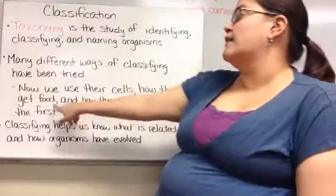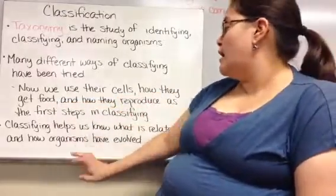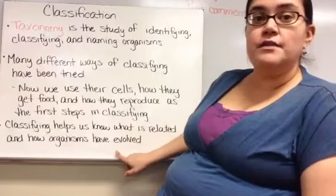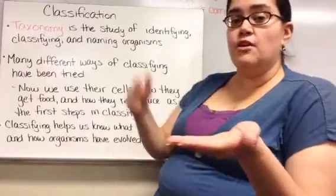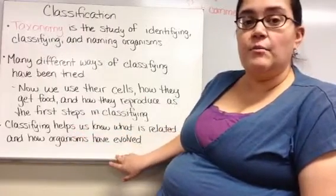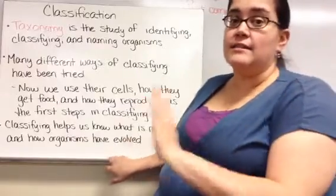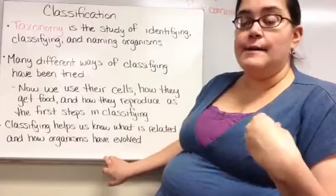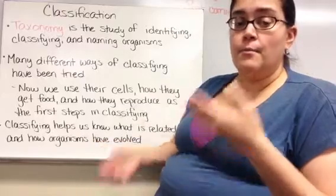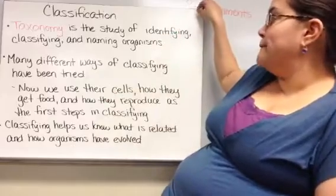Today we'll talk about classifying using cells, how organisms get their food, and how they reproduce. Classifying helps us know what is related to each other and how organisms have evolved. Even though a shark and dolphin ended up in the same place and look similar, they evolved from very different ancestors — a shark lays eggs and is cold-blooded, while a dolphin gives live birth and is warm-blooded.